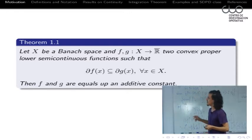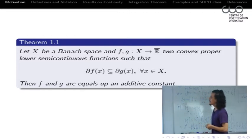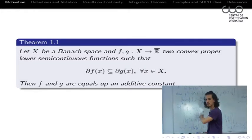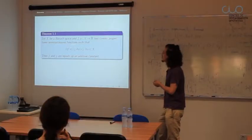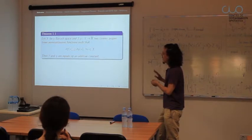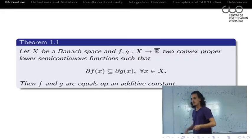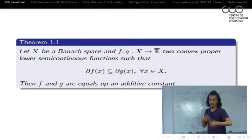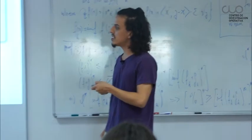This is a classical result of Rockafellar in the 1960s that pretty much solved the integration from the sub-differential. We are working with the same sub-differential that Rafael has picked. I have two functions that are convex, proper, and lower semi-continuous. If I have the inclusion of one sub-differential in the other, then the two functions are equal up to a constant. What we have been doing with Rafael and Abdrein in different ways is try to generalize this to the non-convex case.